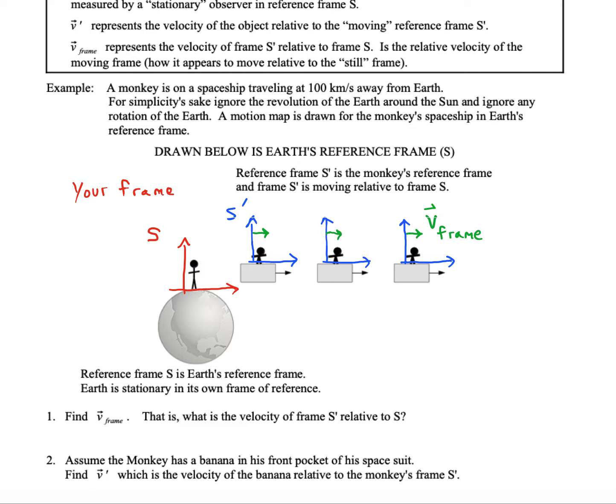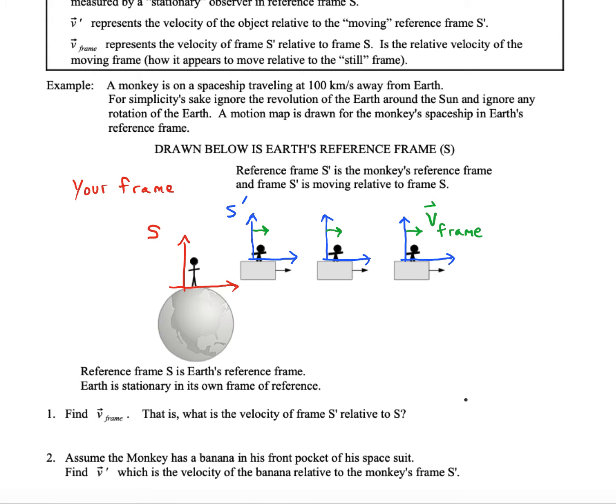Now, they say find V-frame. What does that mean? It means give a number and a direction to the velocity of it. So what is the velocity of frame S-prime relative to S? It's going to be whatever the monkey's speed is. And the direction is to the right, so I'm just establishing here that up is the positive Y, and to the right is positive X. All right, so so far, so good.